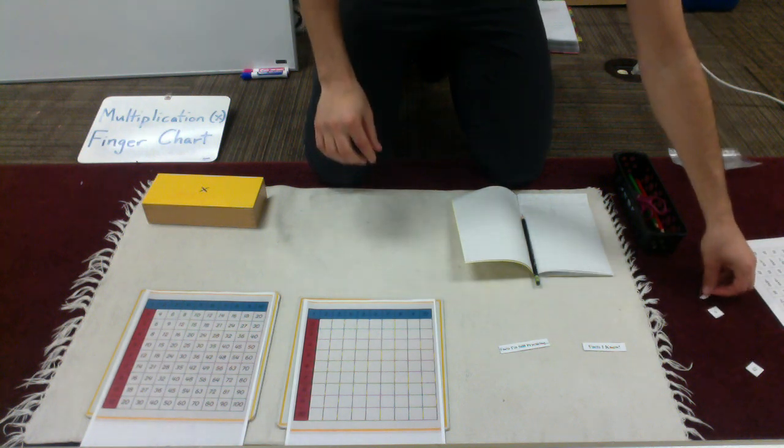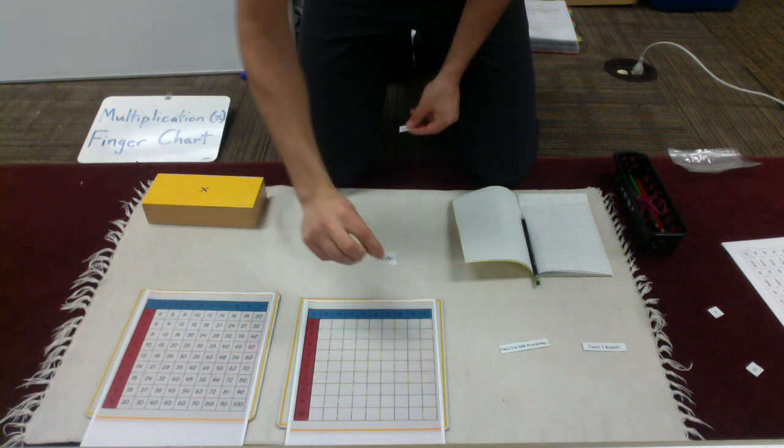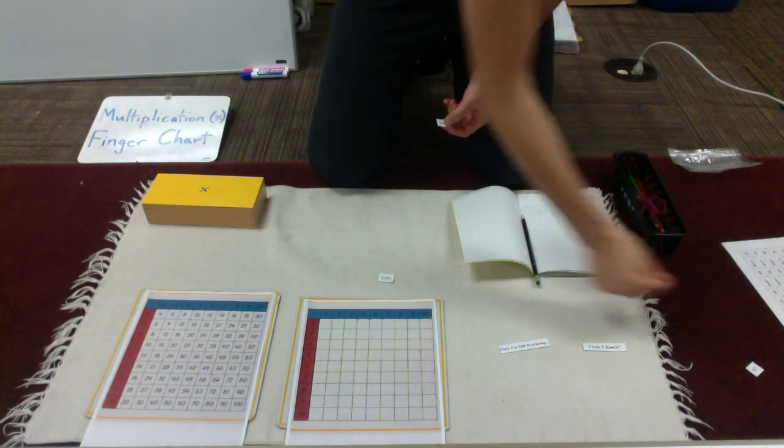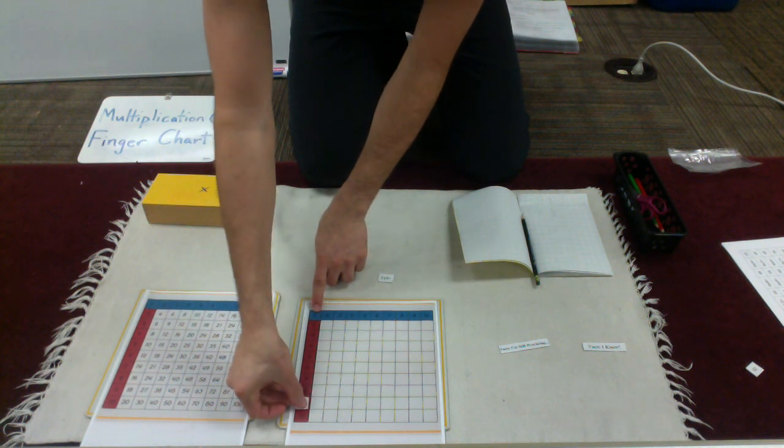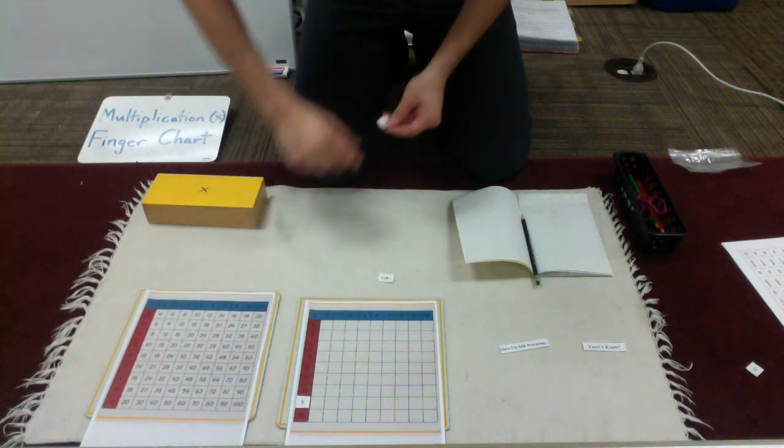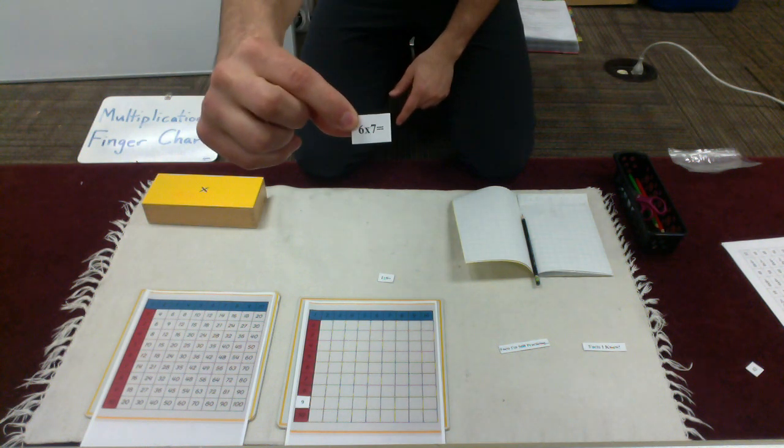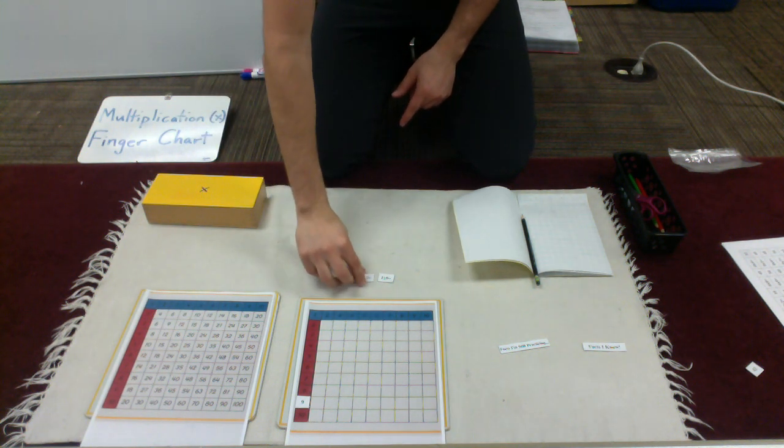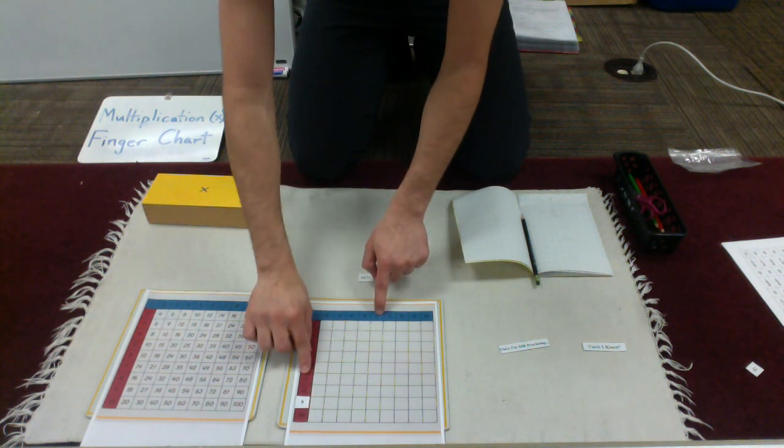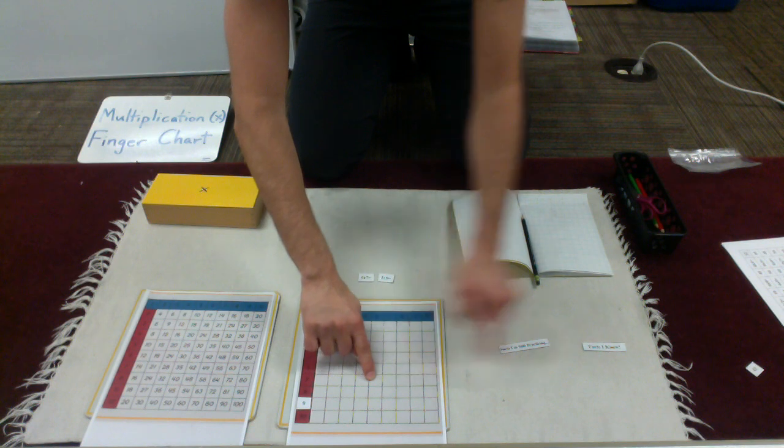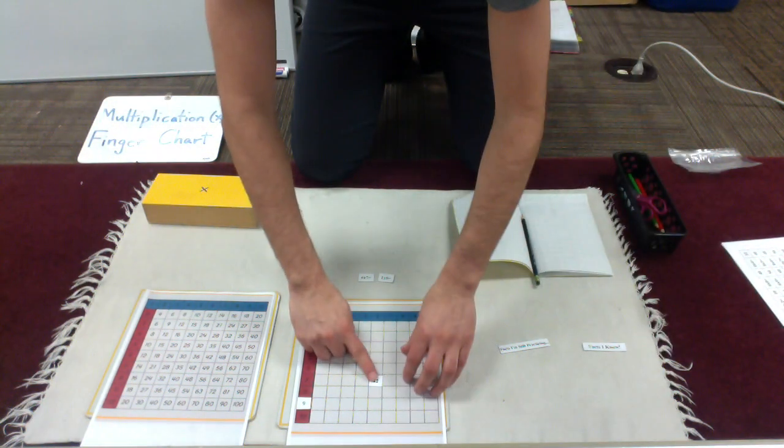So I cut out the facts I know and the facts I'm still practicing sheets. And the two equations that I cut out are 1 times 9, and that product is 9. So 1 times 9, it's actually going to overlap here. And then the other fact I printed out was 6 times 7. 6 times 7 I know is 42, so 6 times 7, they intersect there. I'll place my product right there.